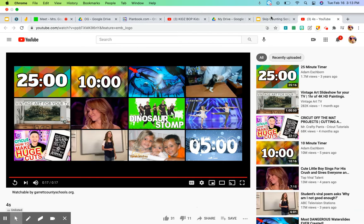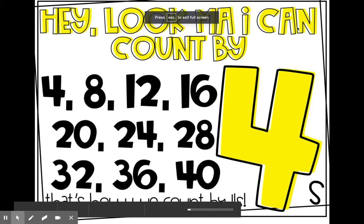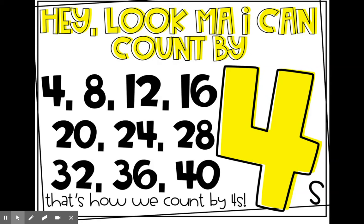So let's practice that together. When we're singing the skip counting song, we are saying all of our multiples of four up to ten. Hey look mama made it. Four, eight, twelve, sixteen. Twenty, twenty-four, twenty-eight. Thirty-two, thirty-six, forty, forty. That's how we count by fours. One more time — hey look mama made it. Four, eight, twelve, sixteen. Twenty, twenty-four, twenty-eight. Thirty-two, thirty-six, forty, forty. That's how we count by fours.